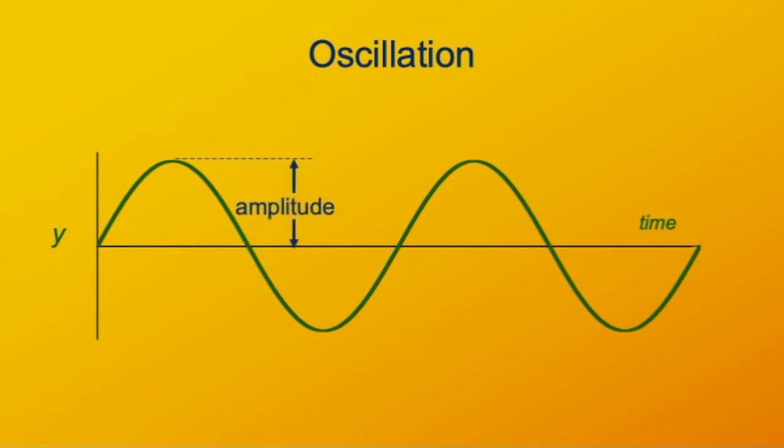We can characterize this oscillation by its amplitude, how much there's a deviation from the equilibrium point, and also by its period, that's the amount of time it takes to complete one cycle.